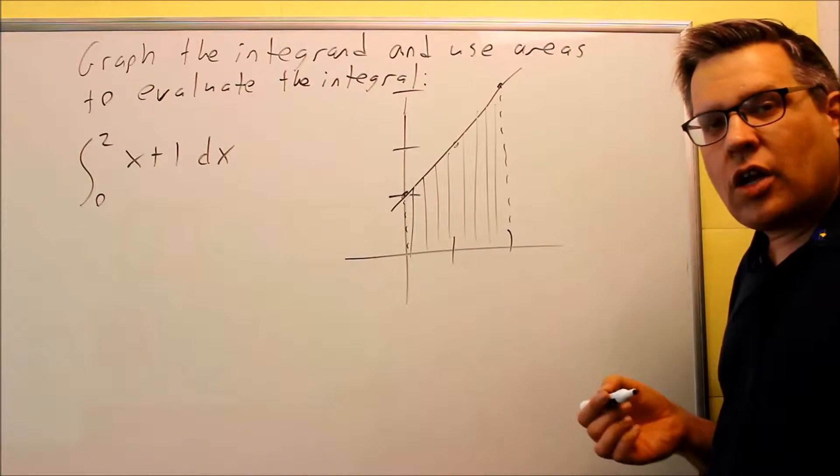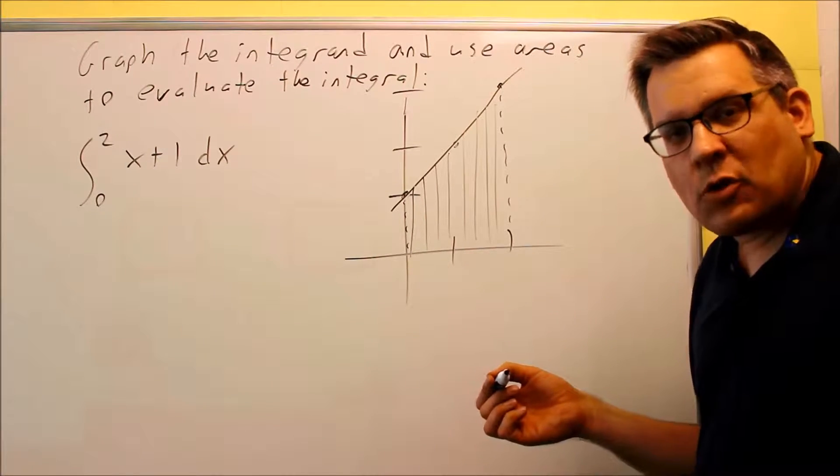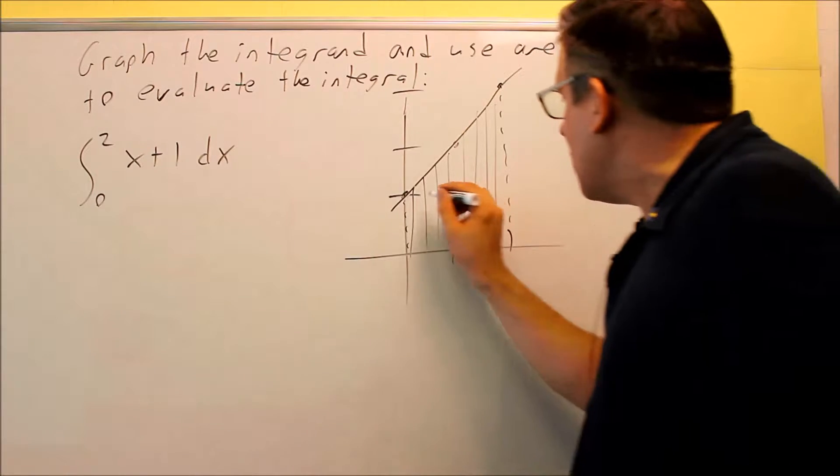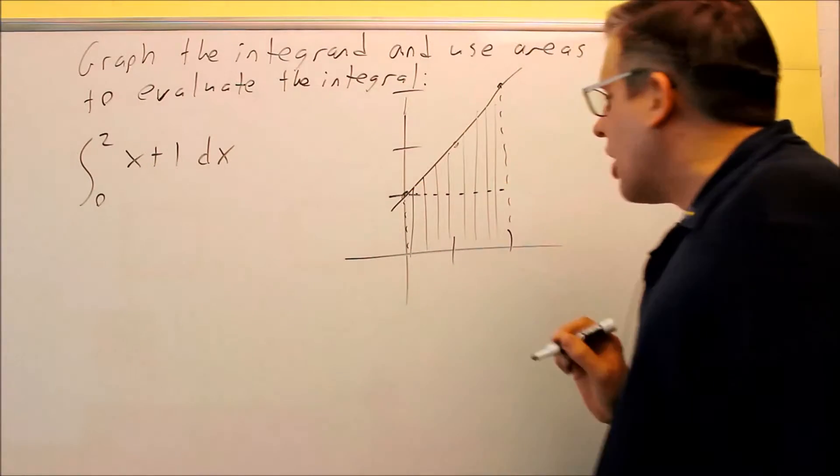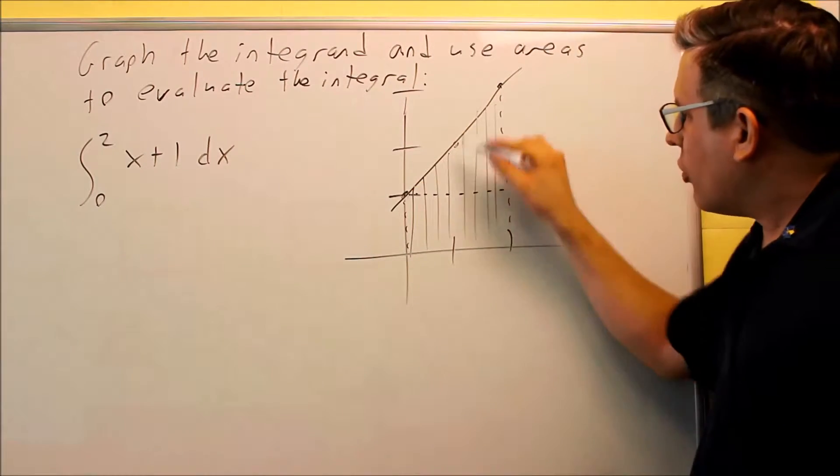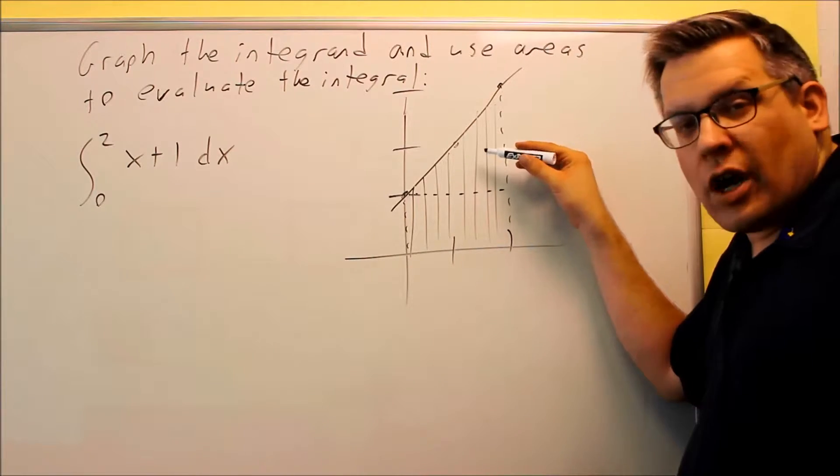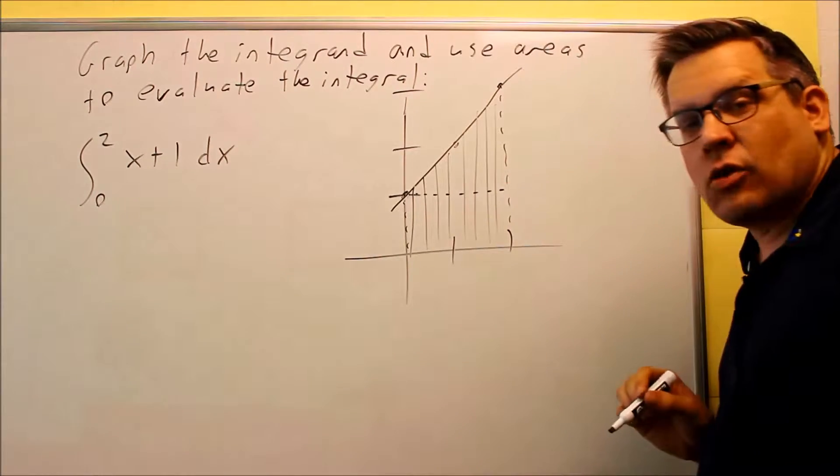Now there's a couple different ways you could do that. If you remember the area of a trapezoid formula, you could do that, but I think it's going to be easier if we break this up into two different areas. We're going to do the area of the triangle and the area of the rectangle down below.